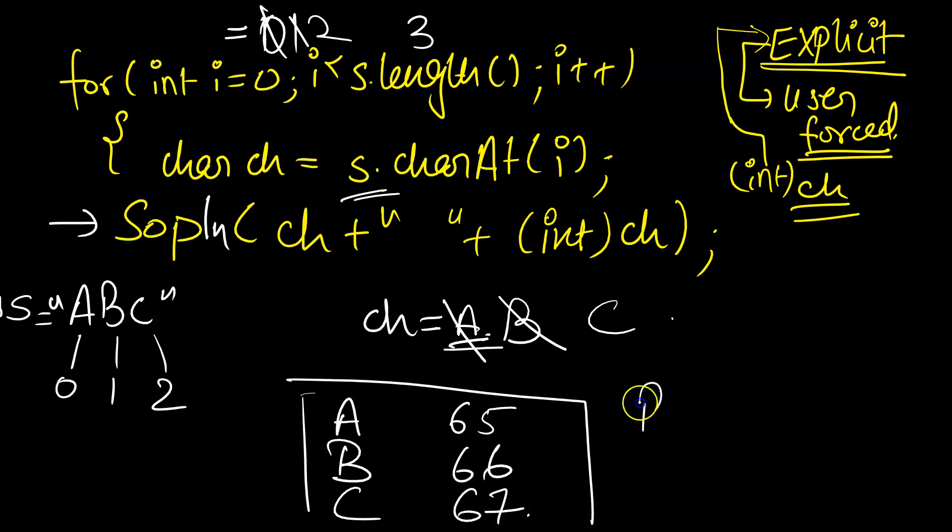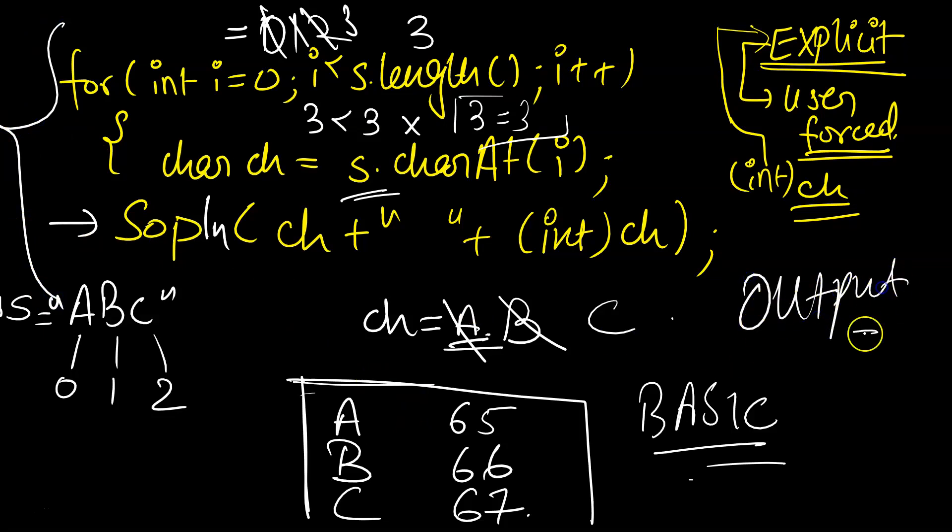Now the value of i will be 3. Our condition will be getting false because 3 is not less than 3. As soon as the condition fails, you will get this output. This is an important program in your output perspective because you can get output prediction questions from this type of program. You must know these types of programs.